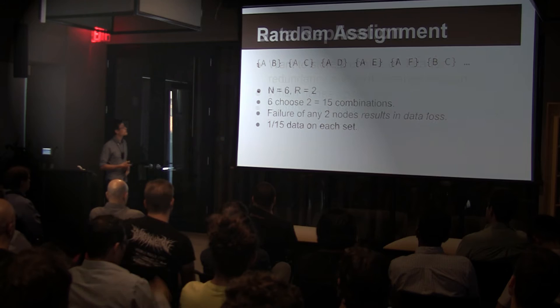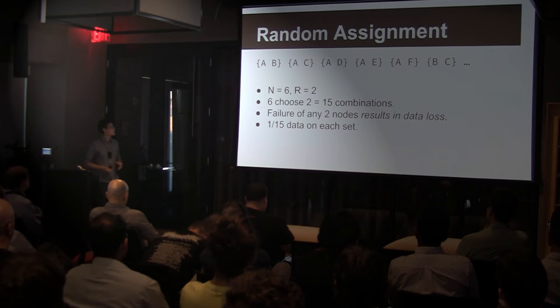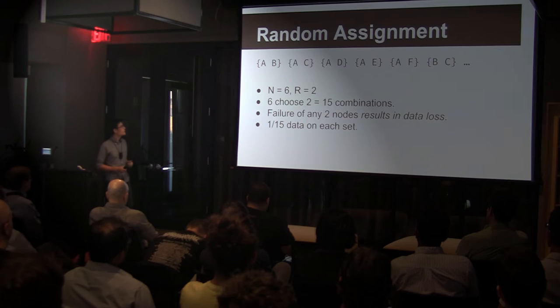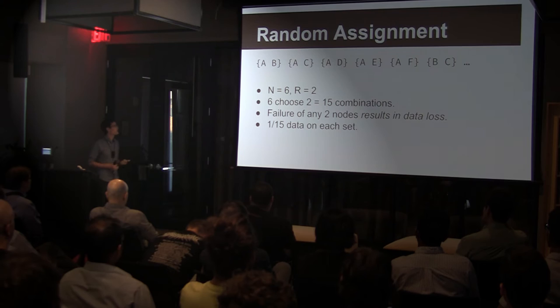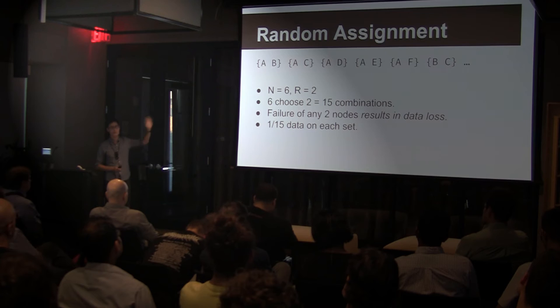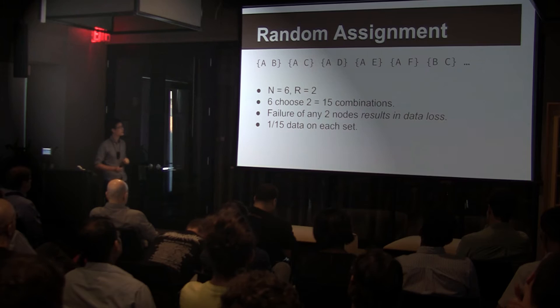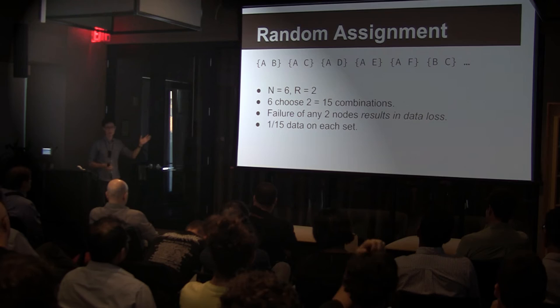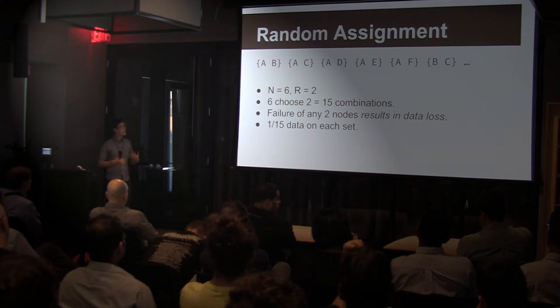The standard way of doing this is with random replication, which is what systems like HDFS use. Let's say we have an HDFS cluster with six nodes and we set R of two. We'd like to place our data on sets of replicas. Each thing in curly braces is one set, and each letter is one server. So our first replica set is AB — all data that hits that set gets copied to A and B. Our second is AC, third is AD, and so forth. There are 15 possible combinations here — that's six choose two.